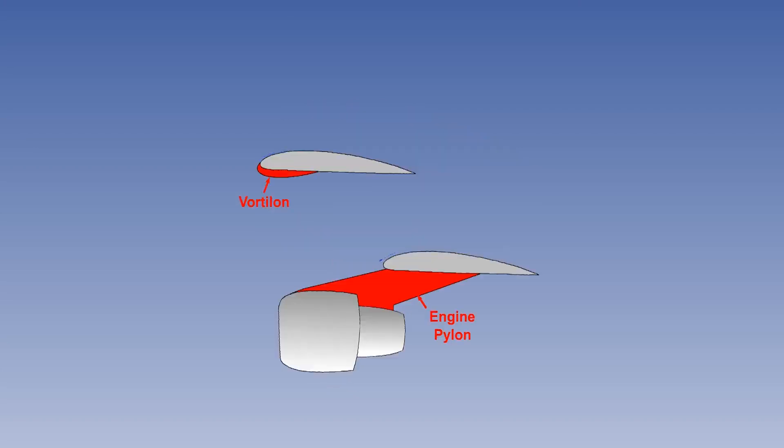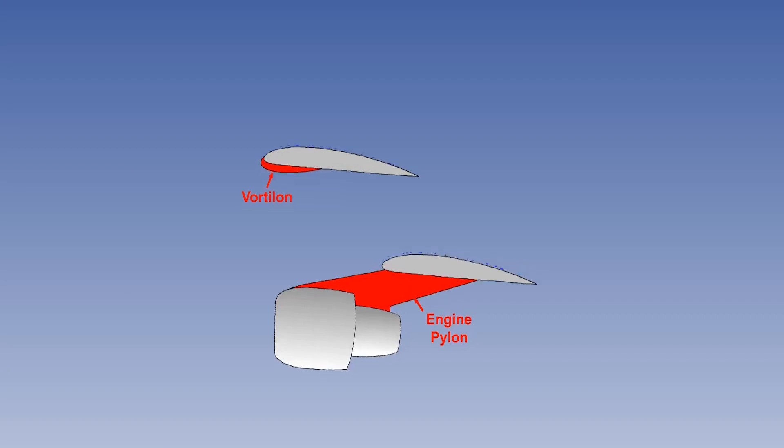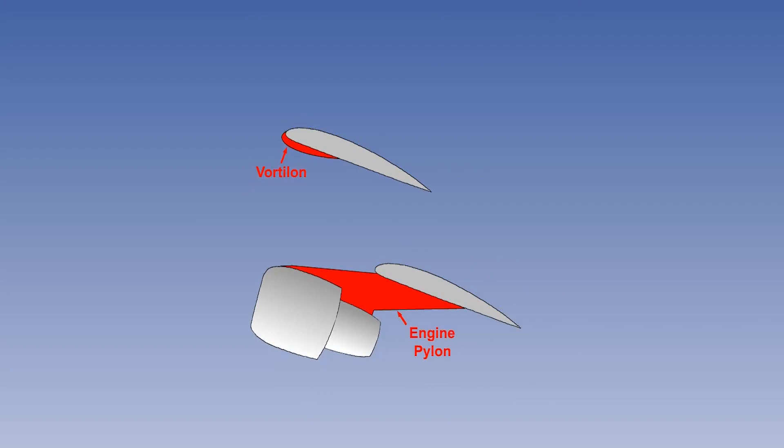Vortilons are similar to wing fences but are shorter and mounted under the wing leading edge. The support pylons of pod-mounted engines act in the same way which is to create a small but intense vortex over the wing's upper surface at high angles of attack to form an aerodynamic wing fence.